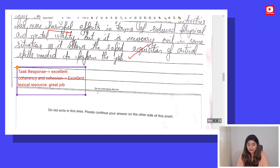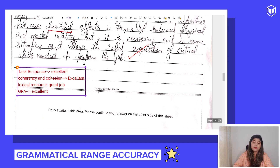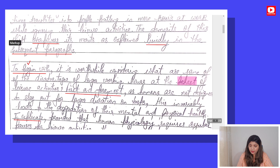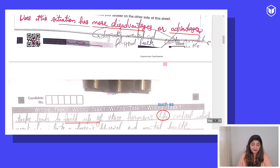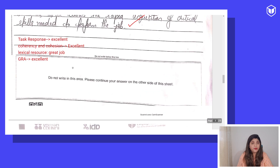Lastly, Grammatical Range and Accuracy — again, excellent. Minor slips were there, such as in the introductory paragraph where the student made a subject-verb agreement error: it should be 'the demerits of this shift overpower its merits.' Such minor grammatical slips were there, but complex structures were used frequently and he was able to produce error-free sentences. He will get a good band score here as well.